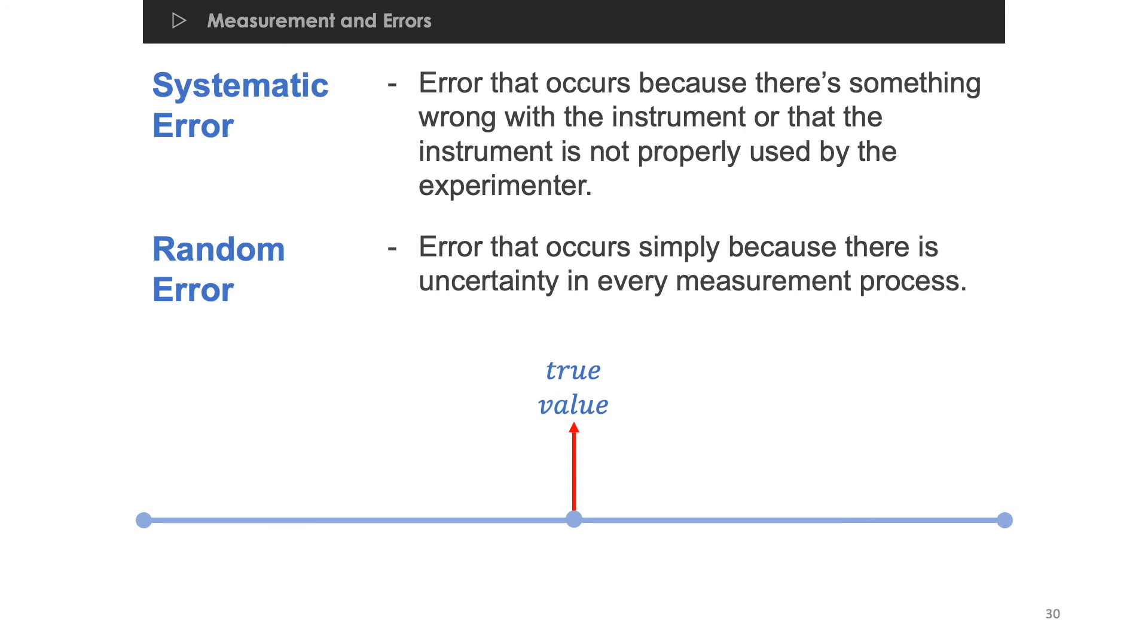Now, how about the case where you perform multiple trial measurements, but this time, the experimental values fluctuate from the true value in such a way sometimes it is higher and sometimes it is lower? Then, in this case, we have a random error.